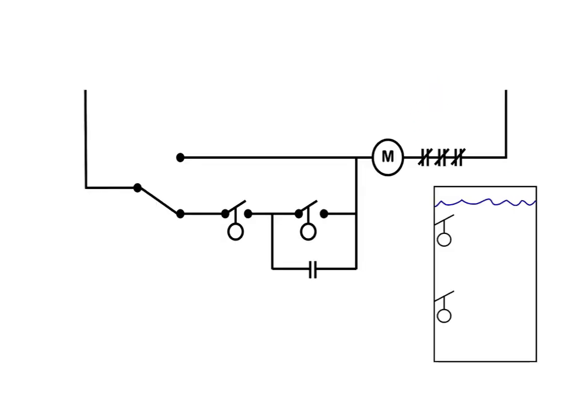So here we have a typical reservoir circuit. We have the reservoir drawn off to the side here. These floats I'll show you are associated with these floats that are in the control circuit. I have a three position selector switch: hand, off, auto. So we're going to focus on the auto position.